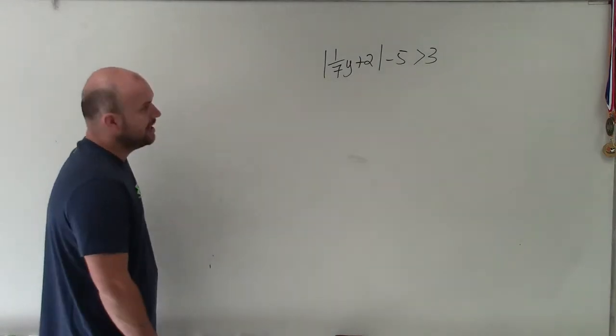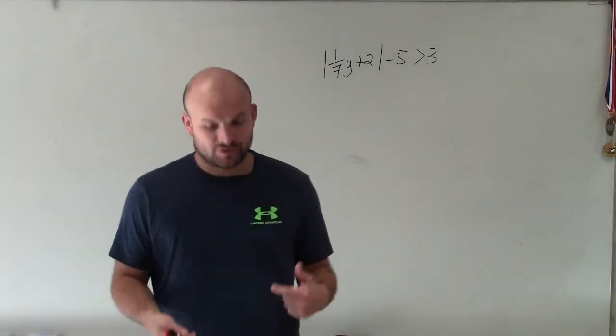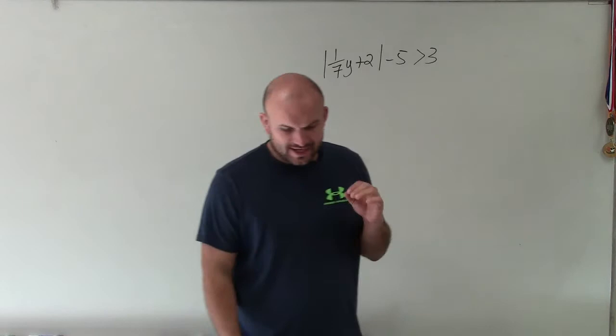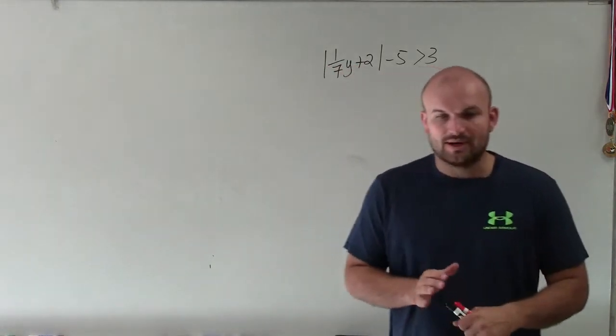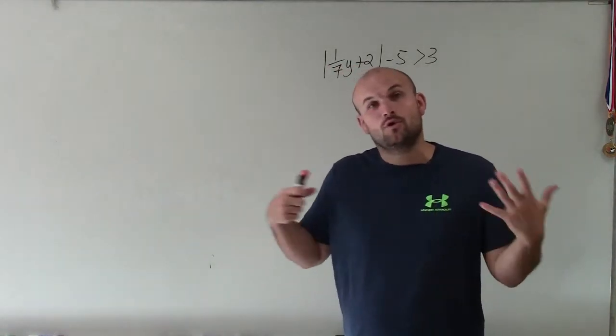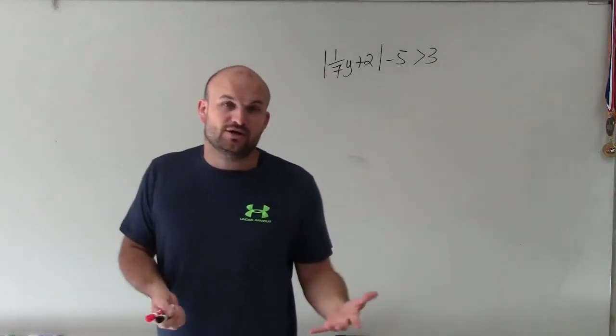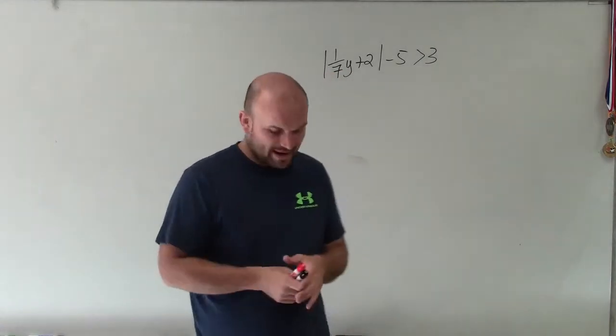So when solving an absolute value inequality, what we basically need to do, just like an absolute value equation, is set up our two cases. We want to set up the case when the absolute value is positive or negative. But when we're doing this for an absolute value inequality, we've got to make sure we flip the sign when we're making it negative.